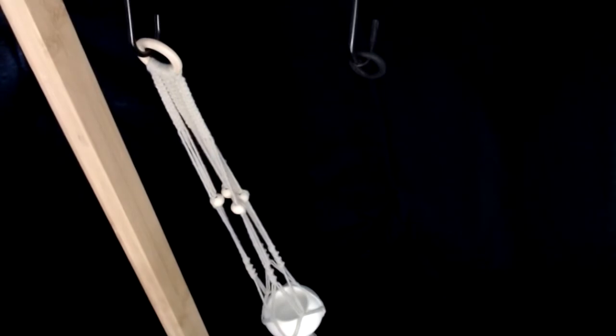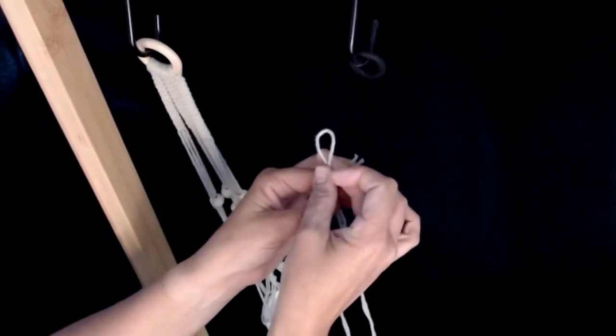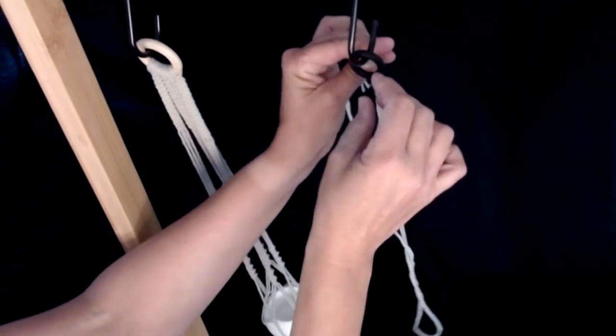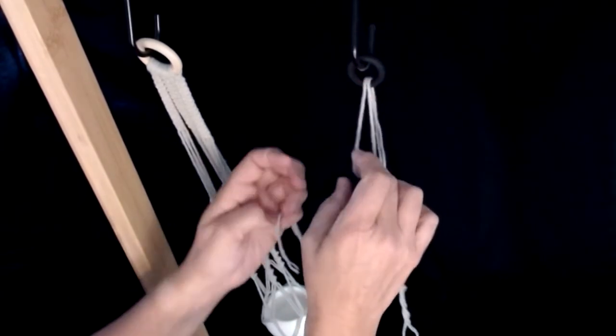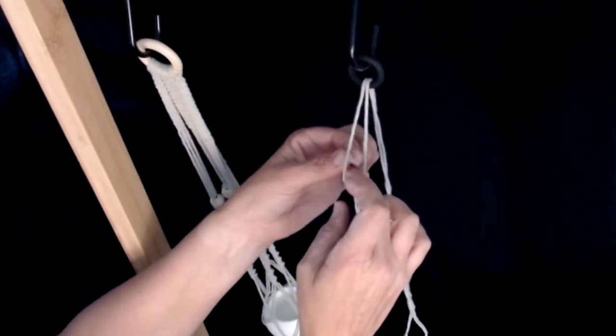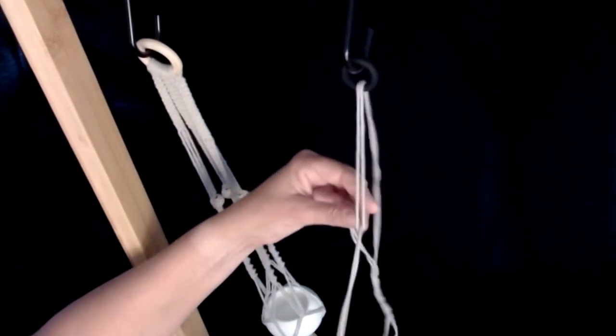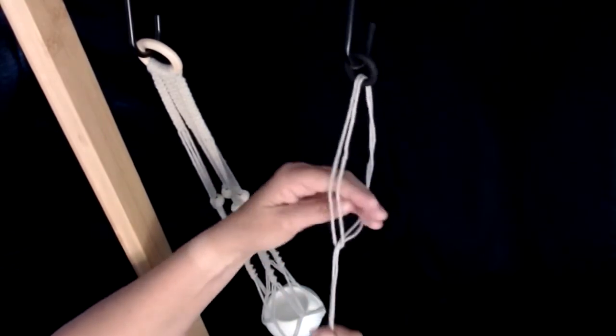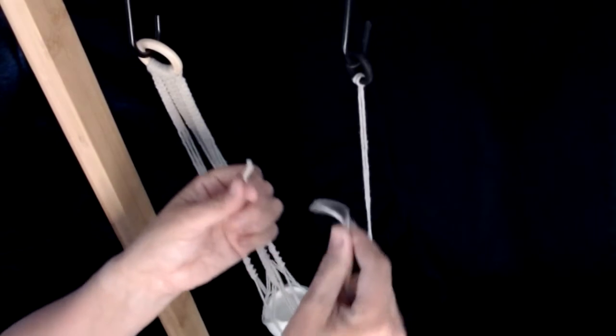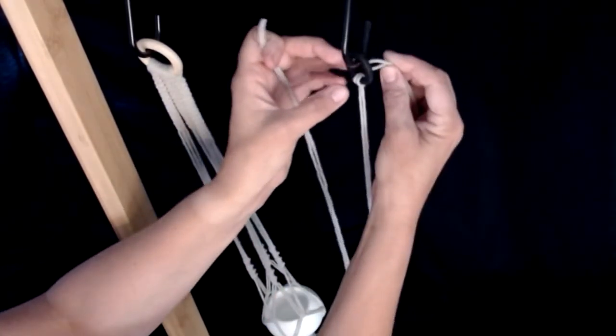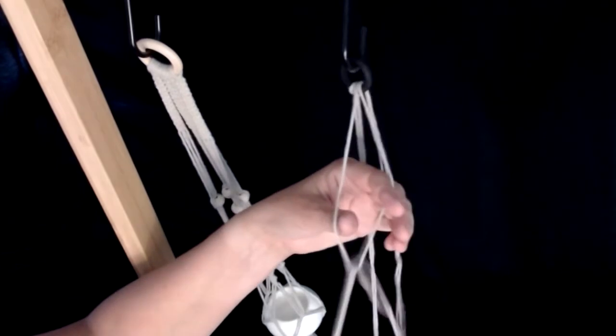We're going to attach our folded lengths onto the ring using a lark's head knot. So coming in from behind we're going to place the loop through the ring, pull on it and put the ends through the loop. Then pull that tight. And do another lark's head knot coming in from behind. Putting the ends through the loop and pulling it tight.